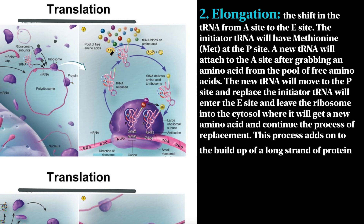Now we have the second stage: elongation. A new tRNA goes through the pool of amino acids, attaches a protein to its attachment site — sacrificing an ATP molecule — then goes through to the A-site. When this happens, the new tRNA will replace our initiator tRNA, and the initiator tRNA will move to the E-site and leave. The new tRNA now has methionine and another amino acid specific to that codon. This process continues: a new tRNA gets another amino acid, goes to the A-site, pushes the old tRNA to the E-site, and the buildup of amino acids forms the strand of protein.